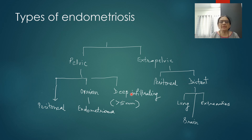The third phenotypic type of endometriosis in the pelvis is deep infiltrating endometriosis, where it infiltrates tissue at more than 5 millimeters depth.